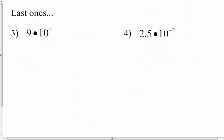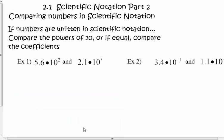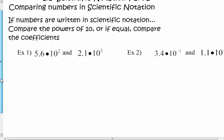Try these two on your own and we'll go over that in class. I did two, you do two. The second part of the lesson: now we're going to compare numbers that are in scientific notation, and if they're not in the same form, we'll put them into the same form — either standard numeral form or scientific notation form.